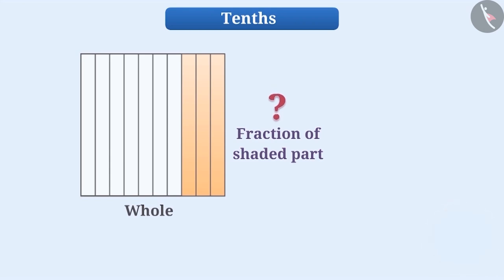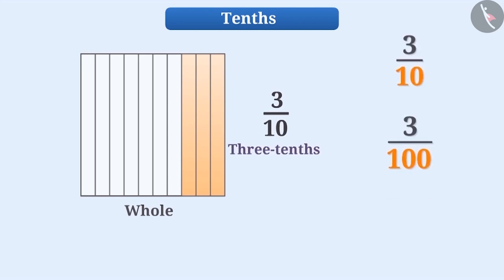The fraction of the shaded part will be 3 by 10 or 3 tenths. We can represent any fraction in decimal form if its denominator is ten, hundred, thousand, etc. Here, 3 by 10 is represented in decimal form as 0.3.